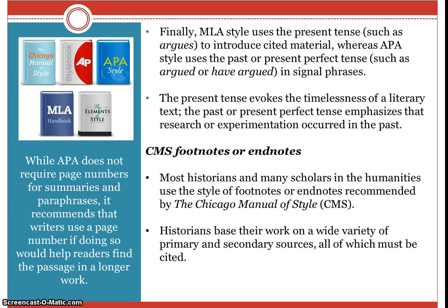MLA style uses the present tense to introduce cited material, whereas APA style uses the past or present perfect tense in signal phrases. The present tense evokes the timelessness of a literary text. The past or present perfect tense emphasizes that research or experimentation occurred in the past.